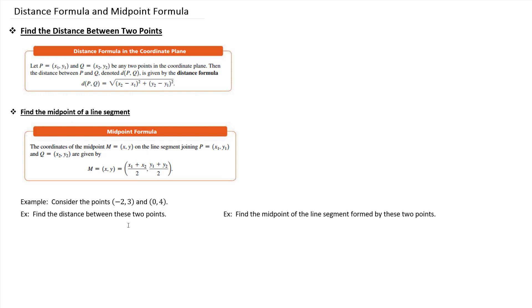The focus of this lesson is on using the distance formula to find the distance between two points on a Cartesian coordinate plane. So our two points are (-2, 3) and (0, 4).